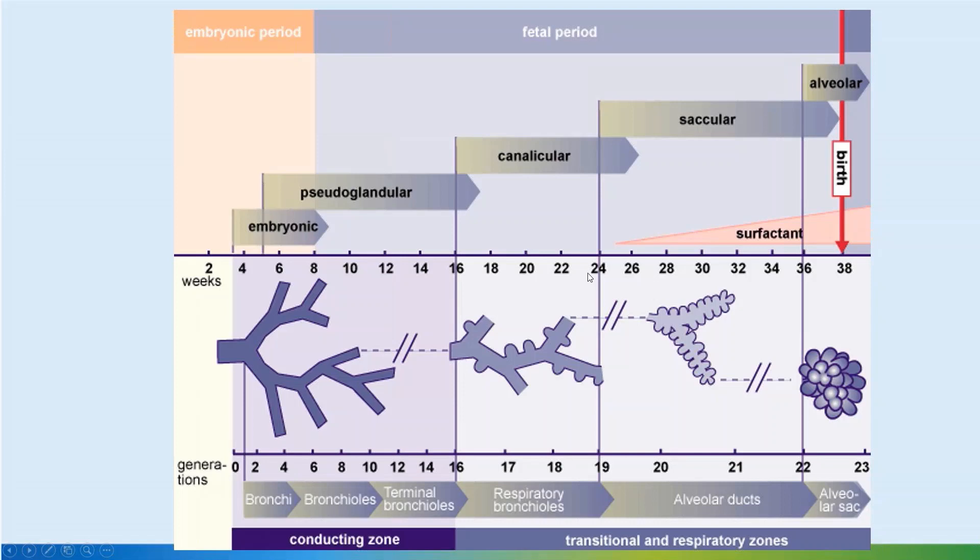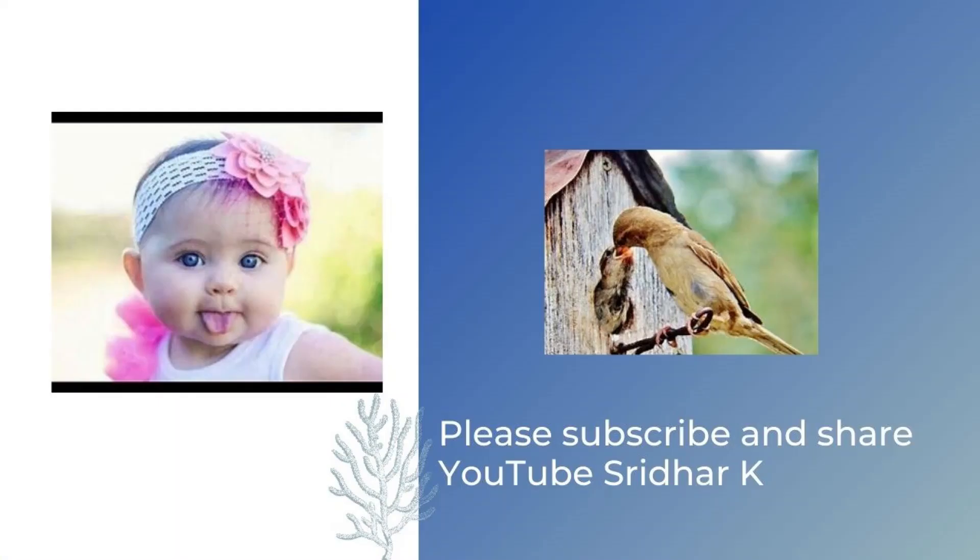As mentioned, surfactant starts getting produced around the 23-24 week mark and begins being released by 28 weeks. Surfactant testing in the amniotic fluid for lung maturity starts showing a different picture based on this.